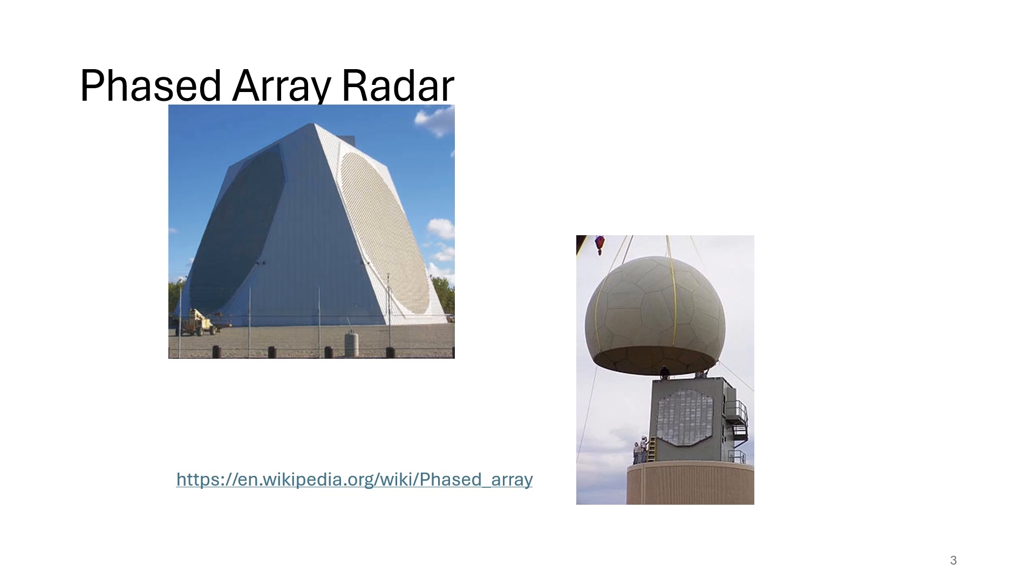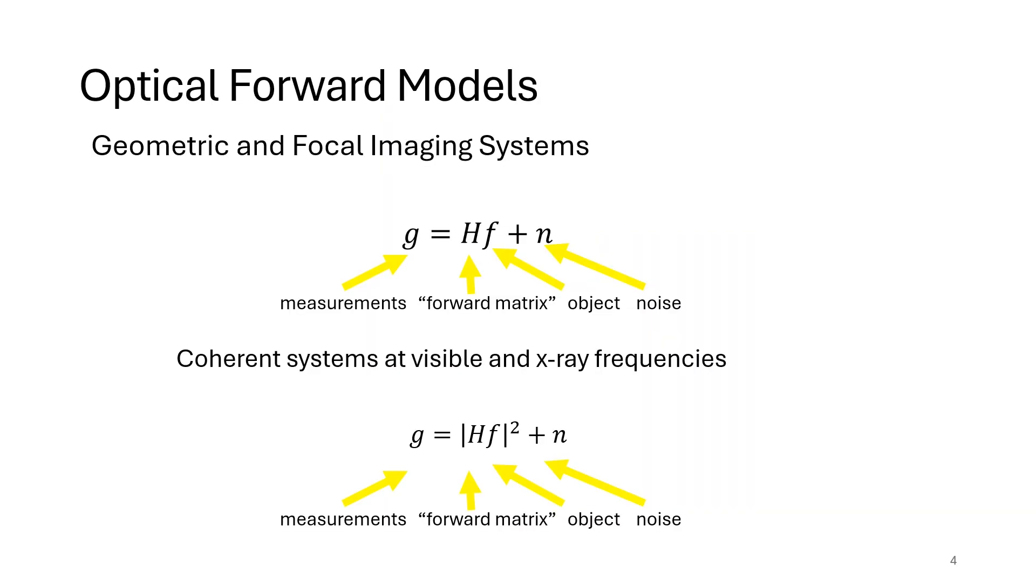What that means is that at optical frequencies, we cannot detect the field itself. We detect the magnitude squared of the field, which is a measure of the irradiance or the power in the field. So we've been through a lot of discussion with geometric systems where we built a linear forward model.